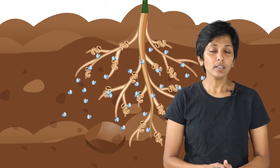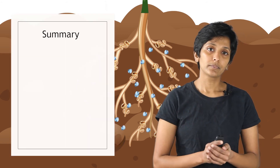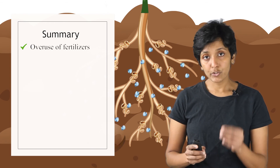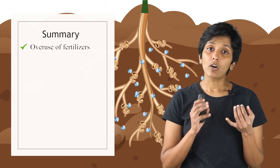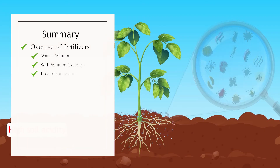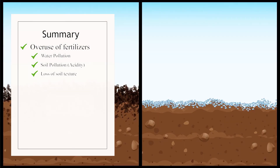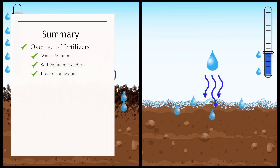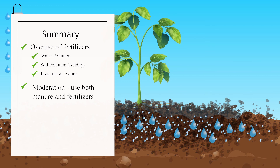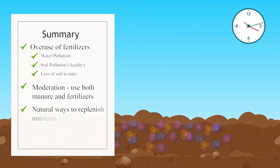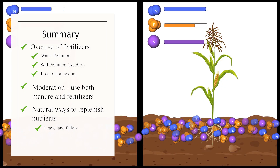In summary, the key issues when overusing fertilizer are water pollution, increased acidity of the soil, and loss of soil texture. Moderation is very important — don't overuse fertilizer and don't leave out manure completely. Leaving land fallow is a good natural method to replenish soil nutrition, and crop rotation is another widely used natural approach for the same purpose.